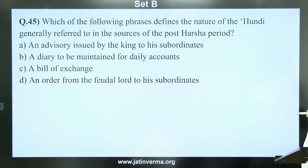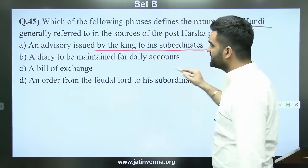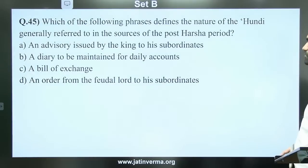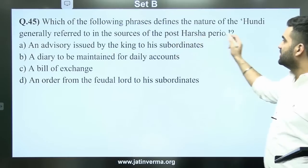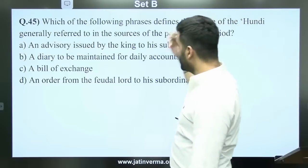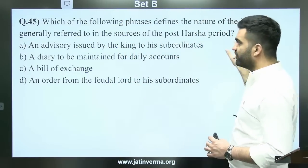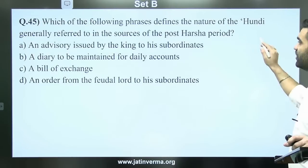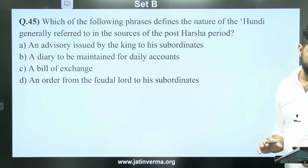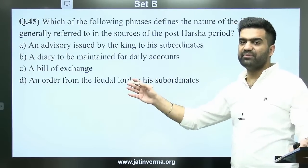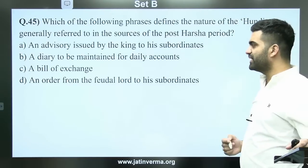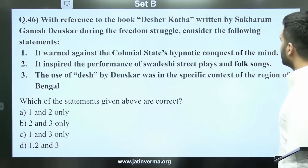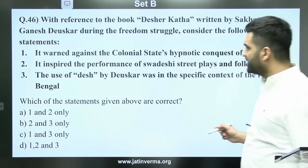Question 45: Which of the following phrases defines the nature of Hundi? Options: an advisory issued by the king to subordinates; a diary maintained for daily accounts; a bill of exchange; or an order from the feudal lord. The answer is C — bill of exchange. This question was asked in the context of the Harsha period. Hundi is a paper on which you declare that person A will pay person B a sum after three months — a form of promissory note.